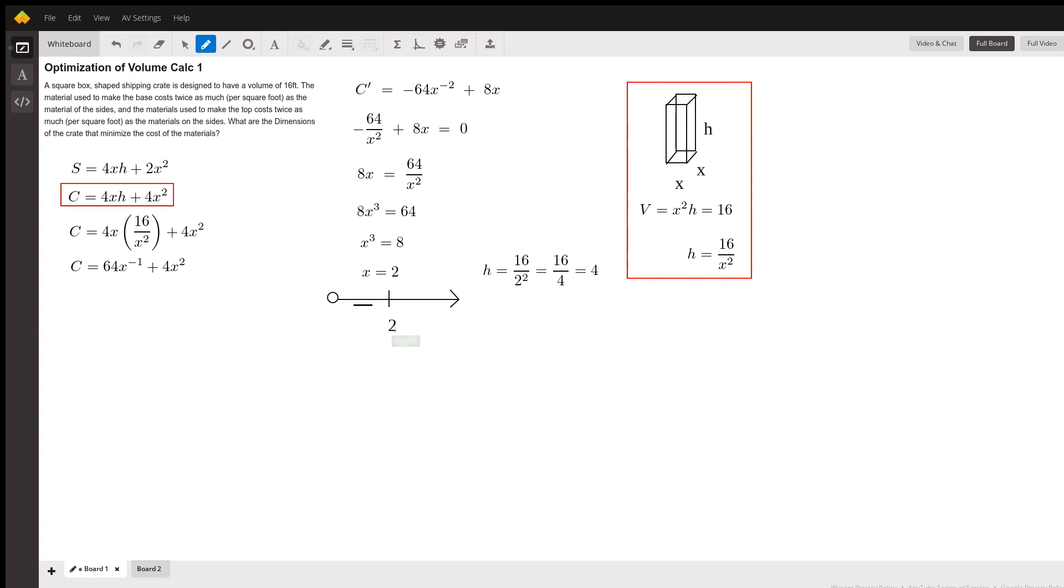If we plug in a number bigger than two, let's plug in four. Four squared would be 16, negative 64 over 16 would be negative four, but eight times four is 32. Negative four plus 32, that's a positive value. That tells us if the derivative is negative, the function is decreasing, and if the derivative is positive, the function is increasing. So that tells us this is a minimum here at two.